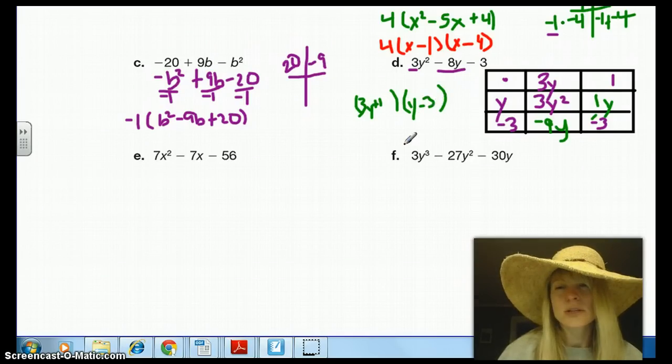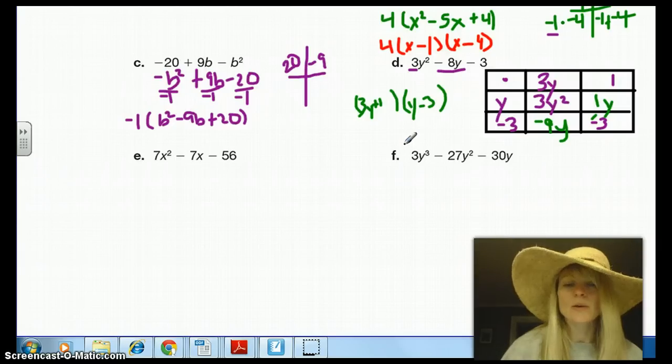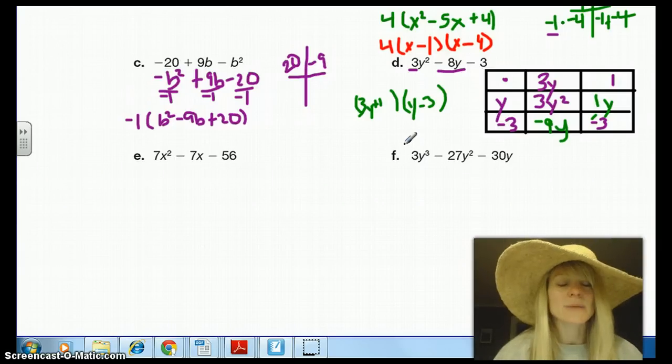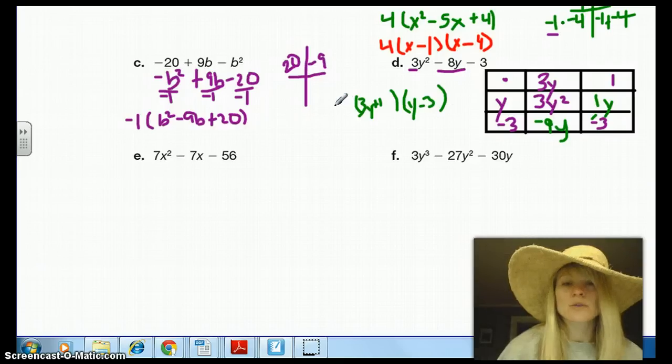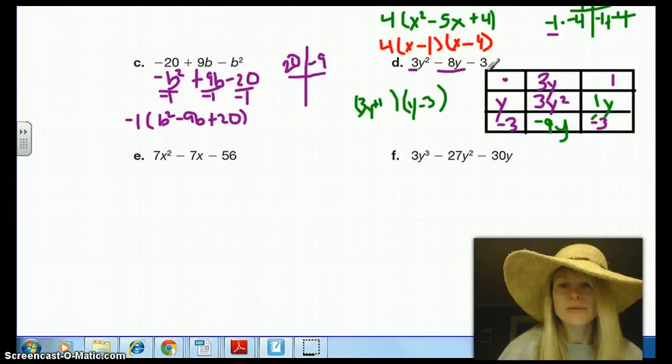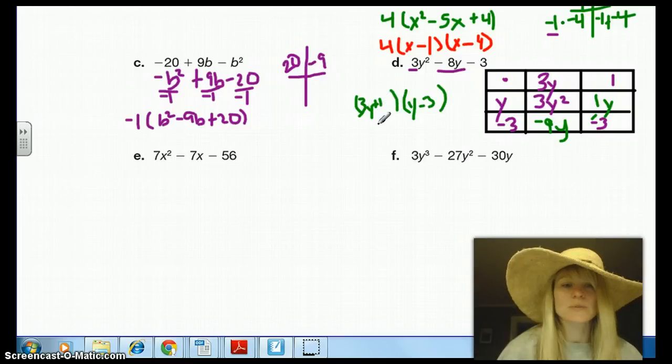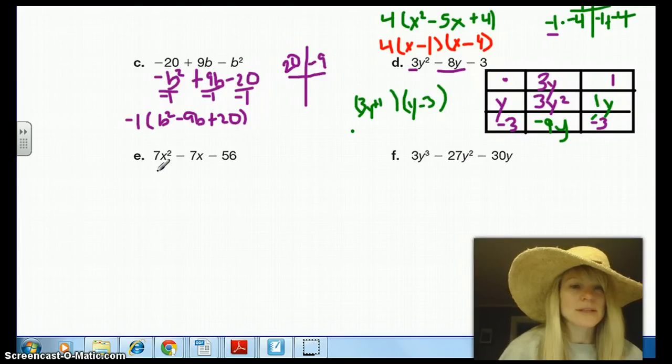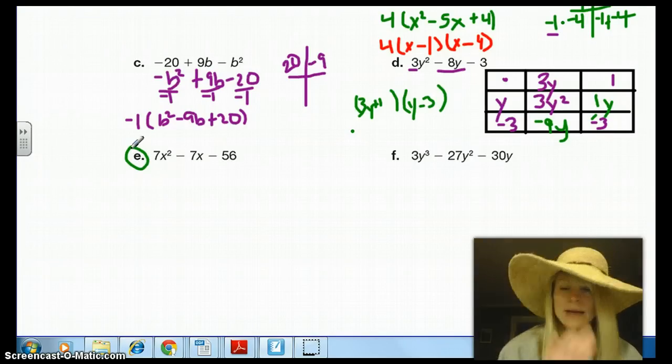And you could have done the t-chart method. Really wouldn't have worked here. You could have just tried guess and check. Doing this, I know that 3y times y has to give me 3y², and then you have to know that 1 times negative 3 is negative 3. And then this was going to give you 1y and negative 3y. So you could have just kind of messed around with putting the different terms in to see where those would work. Hopefully on E, you'll see that there is a GCF here. So I think E you can do on your own. We'll check that in class.